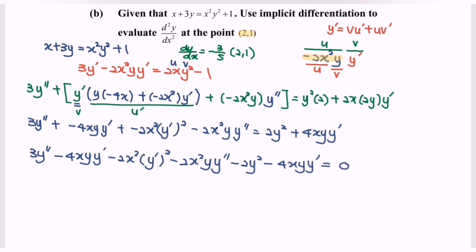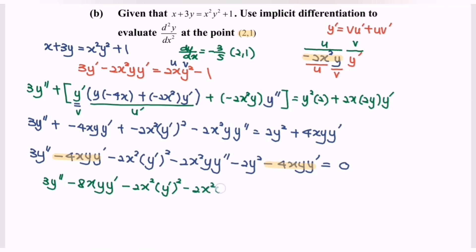Notice that we have common terms. Rewriting the situation: 3y'' minus 8xy·y prime minus 2x²(y prime)² minus 2x²·y·y'' minus 2y² equals 0.